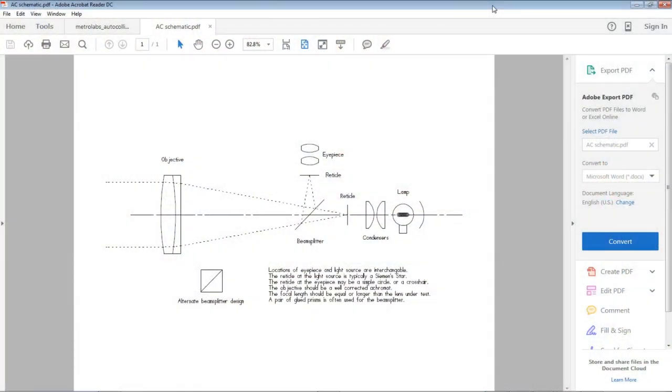Okay, so here we are. This is the schematic diagram of an autocollimator. Now, so as I said, you have a light source here. This is similar to what I have downstairs. The only difference in my basement, the only difference is where the light source and the eyepiece is. In mine, the eyepiece is down here, the light source is up here. It doesn't matter. It functions the same way.